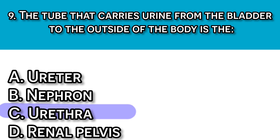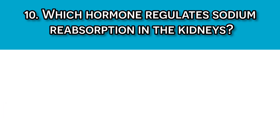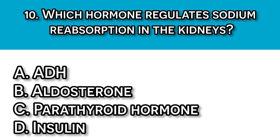Question number ten: Which hormone regulates sodium reabsorption in the kidneys? A. ADH, B. Aldosterone, C. Parathyroid hormone, D. Insulin. Our answer should be B, aldosterone, because aldosterone increases sodium reabsorption in the distal tubules and collecting ducts, helping to maintain blood pressure.